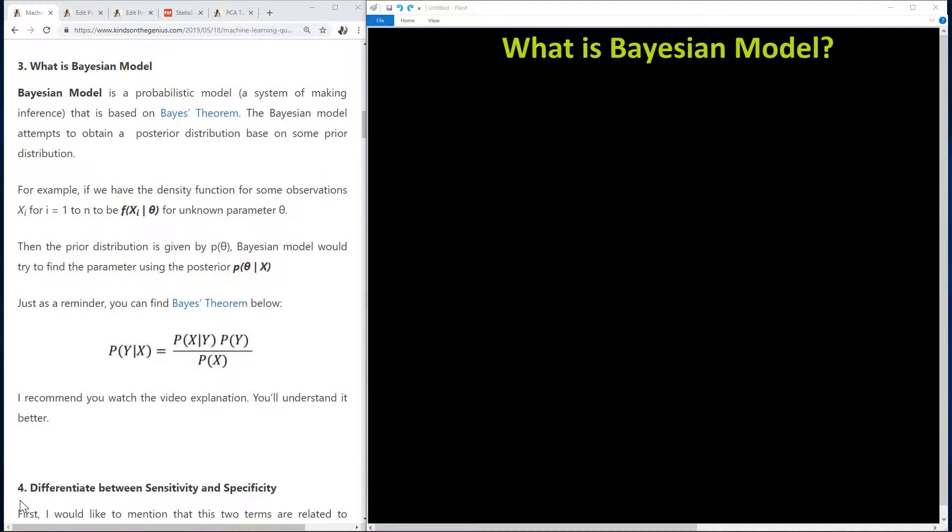Actually, before now, I actually jumped to question 4 that says differentiate between sensitivity and specificity. So now, what is Bayesian model? And what I want to let you know is sometimes these concepts are really very simple, and the names are just making it appear to be so difficult.